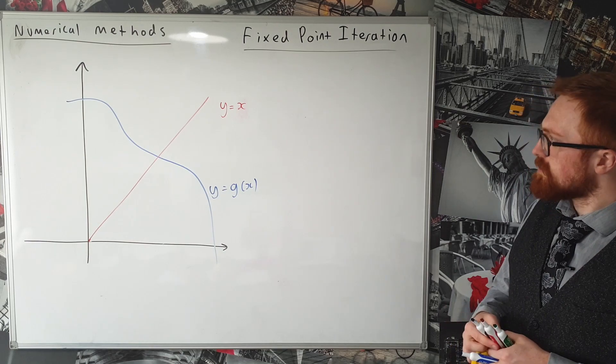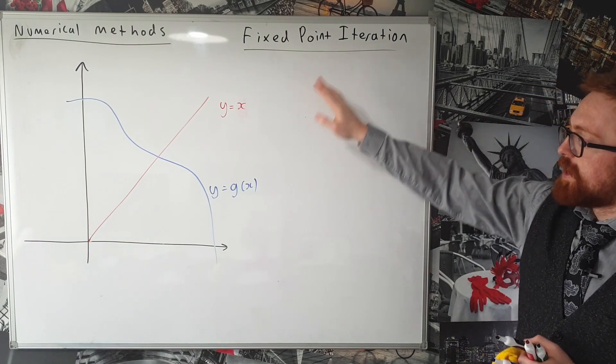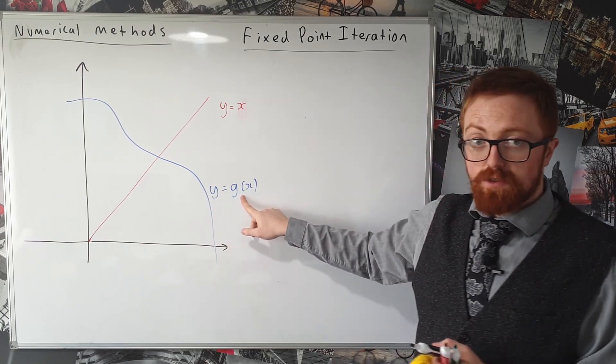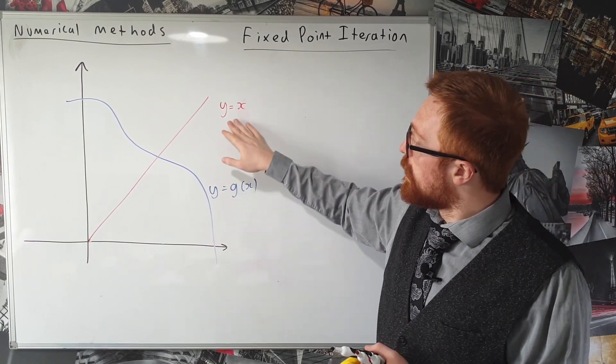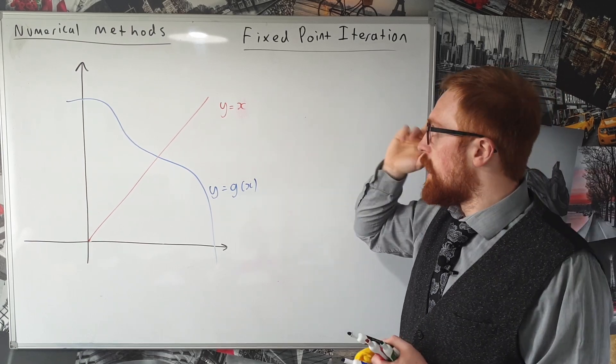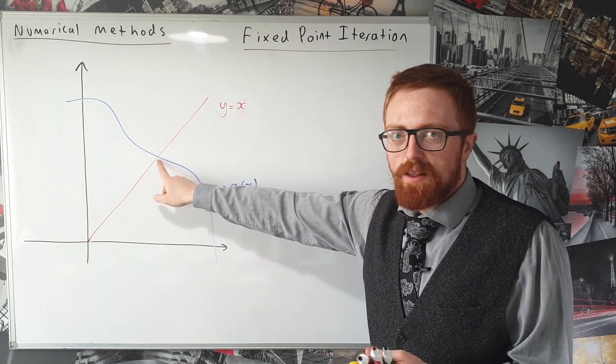So what this method does is it finds the point where some function, g of x, or the graph of it, intersects the line y equals x. So this method looks for this point.